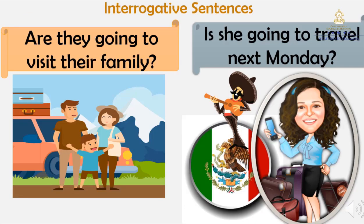We are going to follow with the interrogative sentences examples. Are they going to visit their family? Is she going to travel next Monday? Repeat please: Are they going to visit their family? Good. One more time please: Are they going to visit their family?